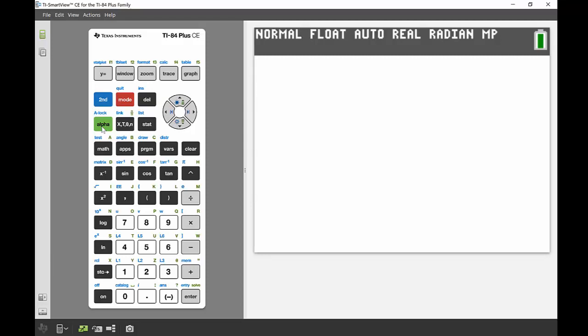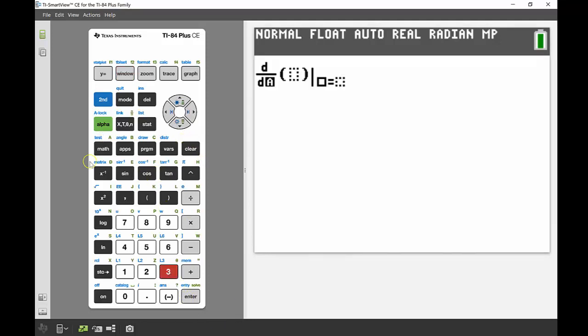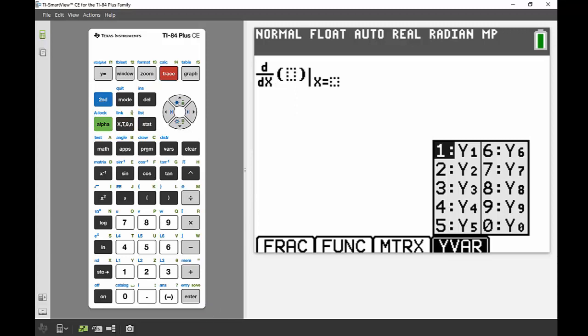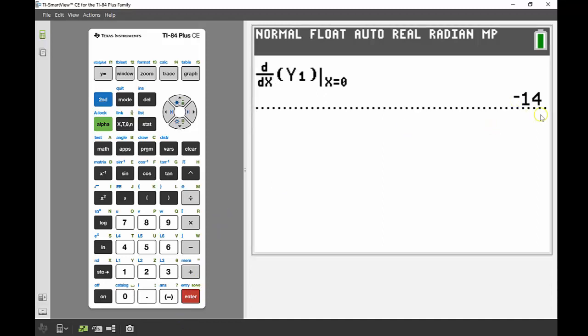To do that I'm going to use alpha and then my quick keys to get up my derivative template. That's number 3, the derivative. In here my variable is x. I could write out my whole equation but I already stored that under y1, so I can just use alpha f4 to bring up my y1 equation. I'm solving for where x is equal to 0 because I'm looking at my initial condition. Enter and I can see my acceleration is equal to negative 14.